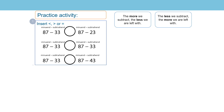If I look at the first set of calculations, I can see that the subtrahend is 10 more in the calculation on the left than in the calculation on the right. I know that the more we subtract, the less we are left with. Therefore, 87 subtract 33 is less than 87 subtract 23, as I am subtracting more from the subtrahend in the calculation on the left, so I am left with less. So I would insert the less than symbol. 87 subtract 33 is less than 87 subtract 23.